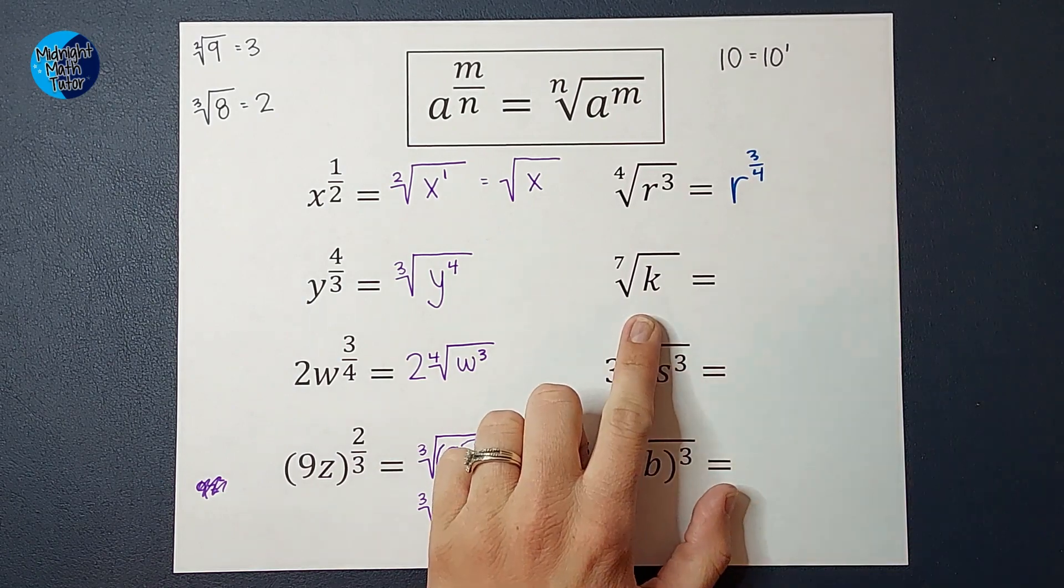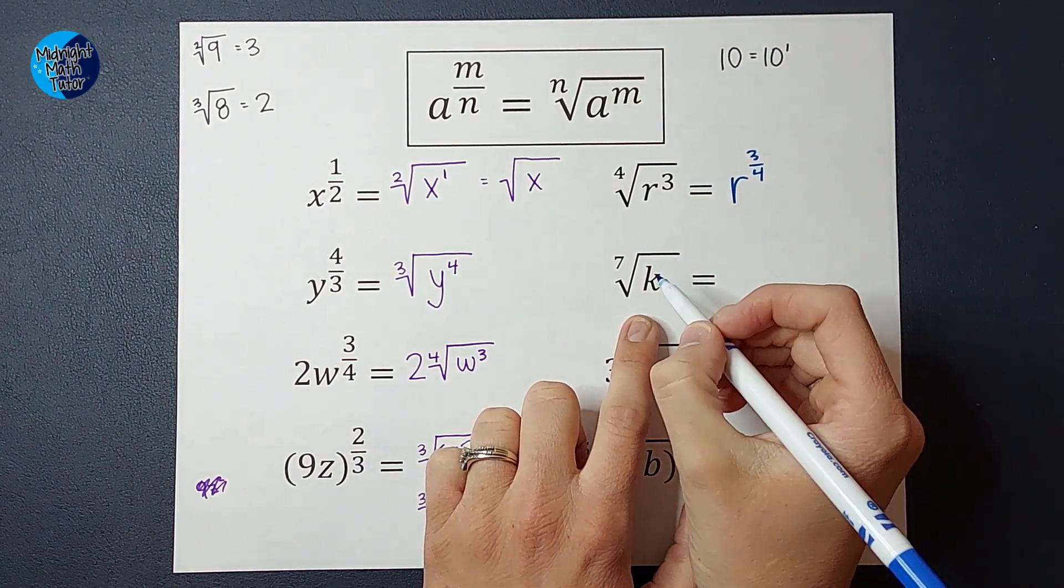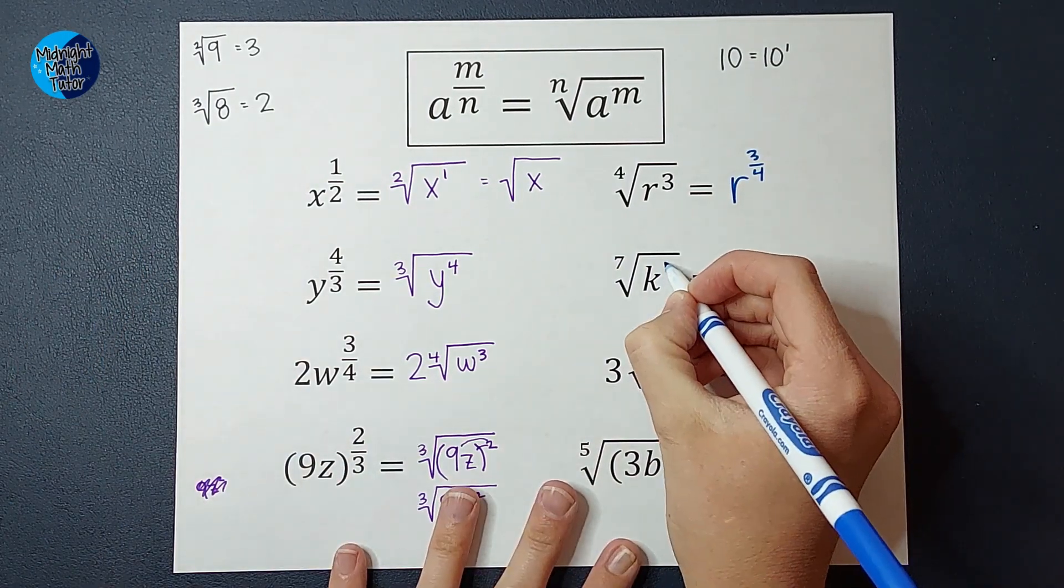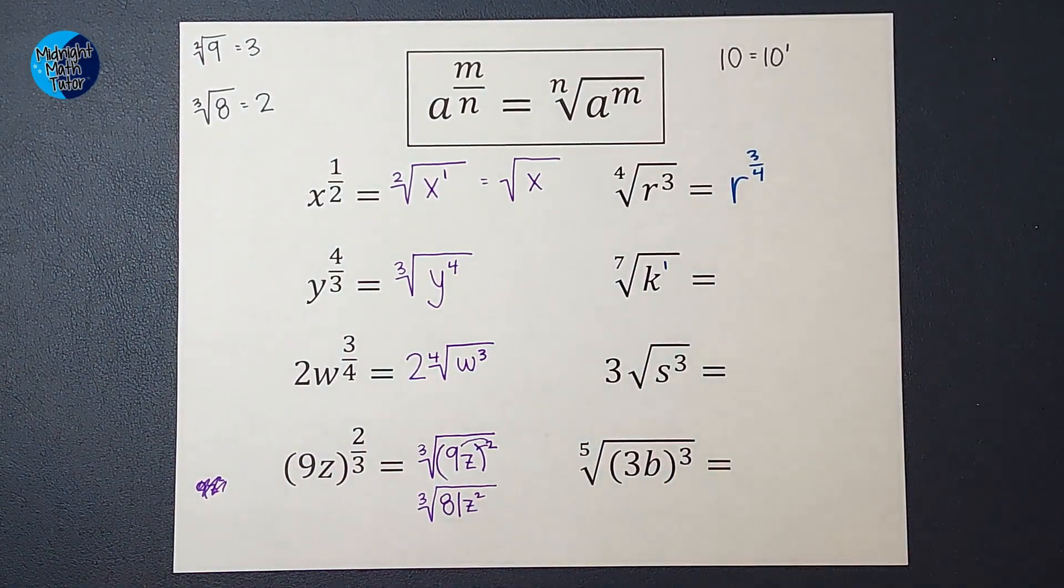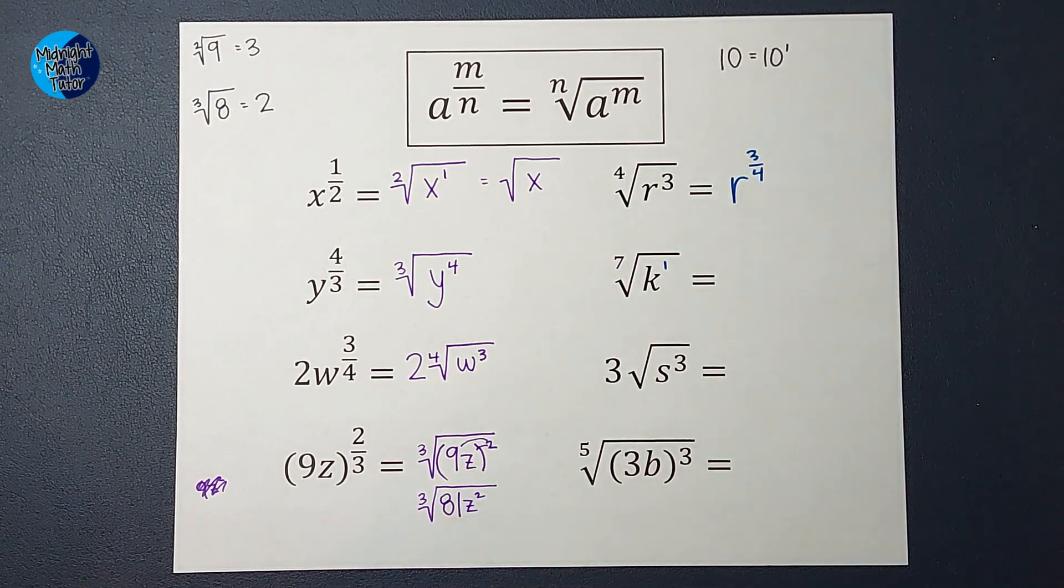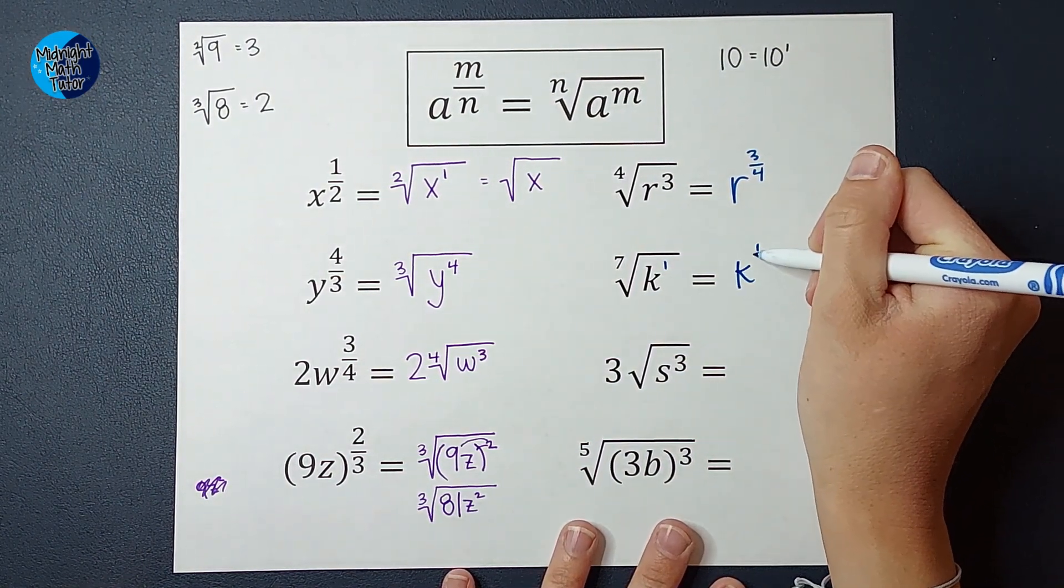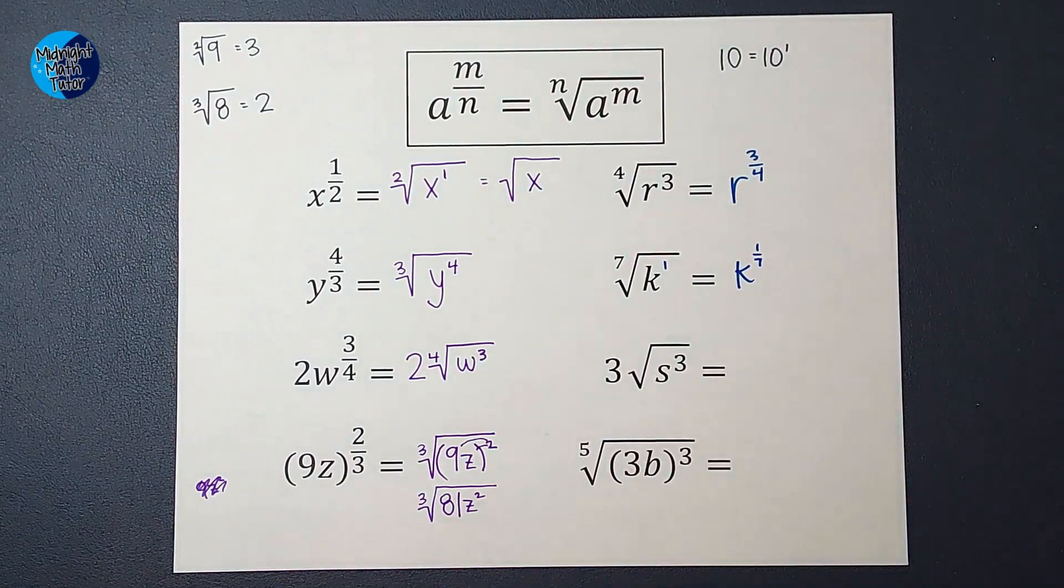This one, I just said k. You're like, k doesn't have an exponent, but remember we said if there isn't an exponent, there's really a 1 there. We just don't write it every time. So if I convert this one, it's going to be k to the 1 seventh power.